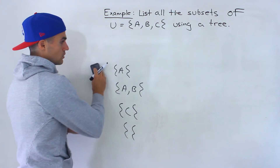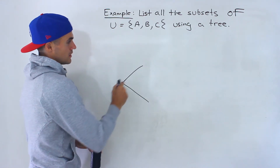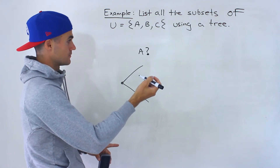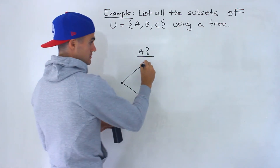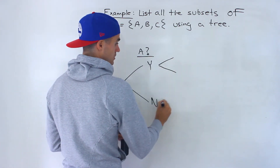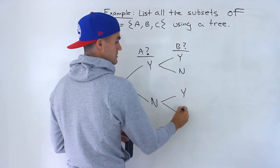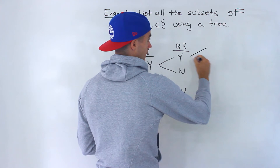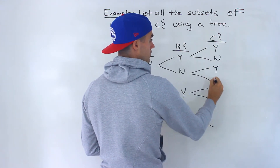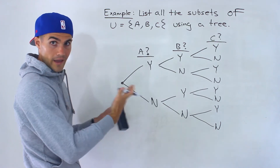So how can we show all of these different combinations? We start here, and on the first branch of the tree we ask: is element A going to be in the subset? There are only two possibilities — either yes or no. Then for the second branch, we ask: is B going to be in the subset? Yes or no. And finally, for C, same thing — two possibilities, yes or no.